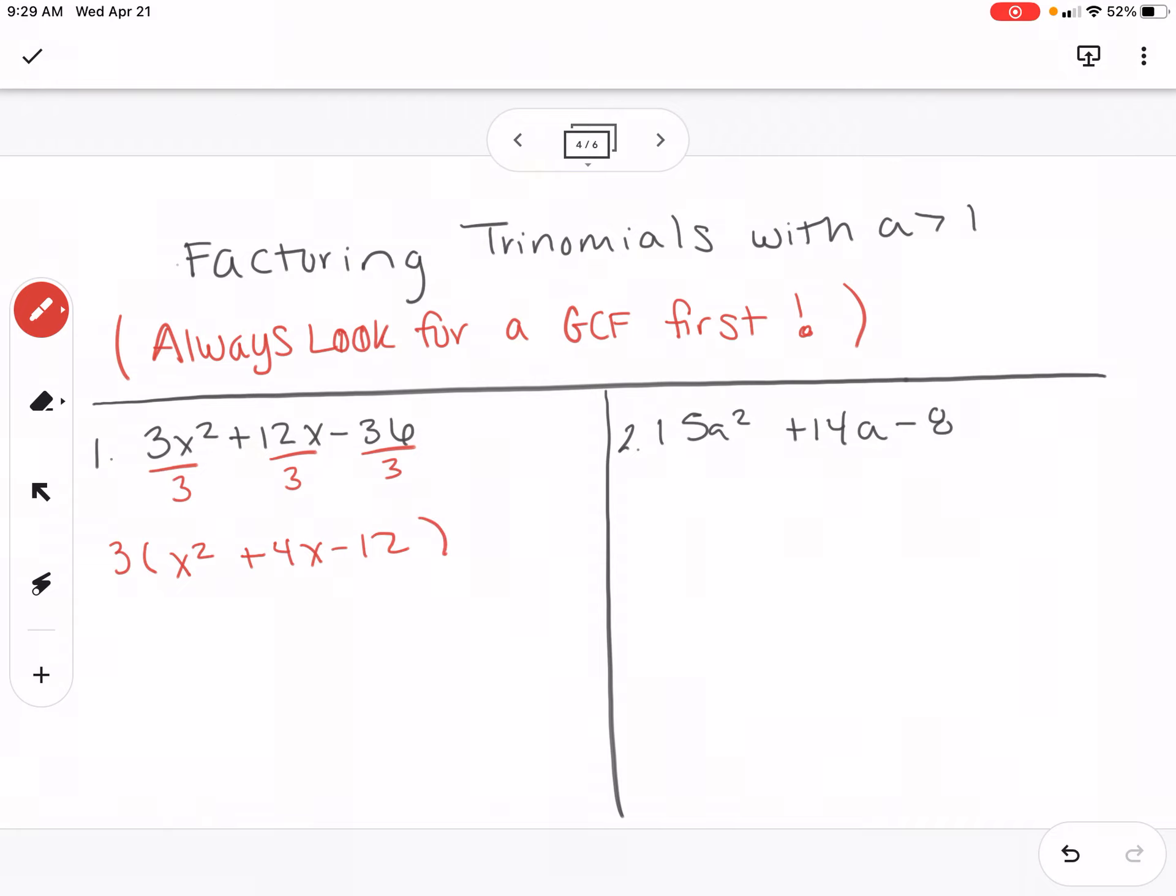Let's ignore it for now. But in the middle, I still have a trinomial. And I want to factor that trinomial. So I'm going to use the method we used in the other problems. So here, I'm going to do 1 times negative 12, and that gives me negative 12.